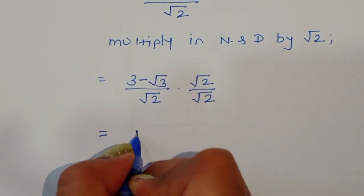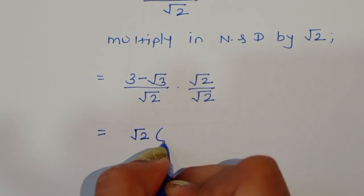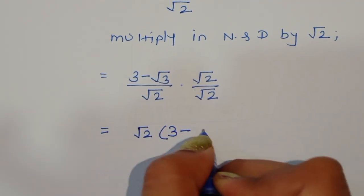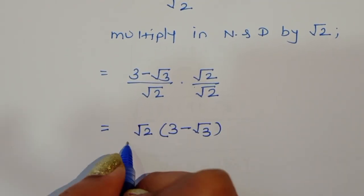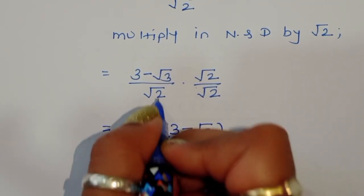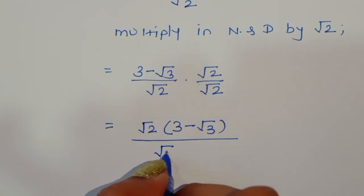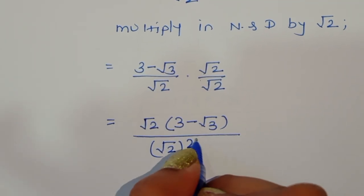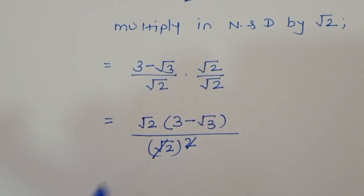Multiplying out, we get square root of 2 times (3 minus square root of 3) divided by square root of 2 whole squared. The square root of 2 squared in the denominator simplifies to 2.